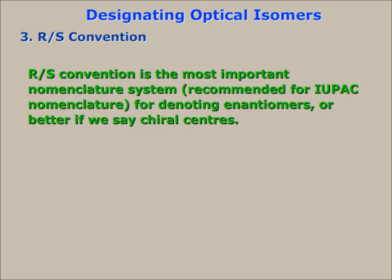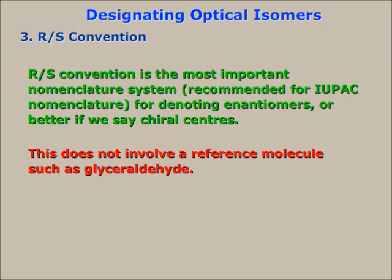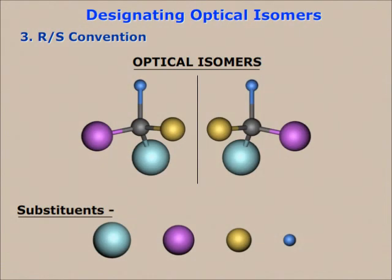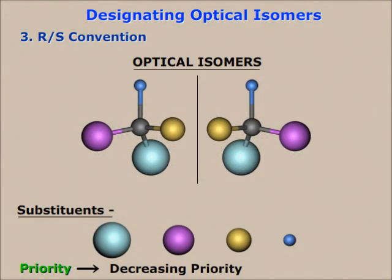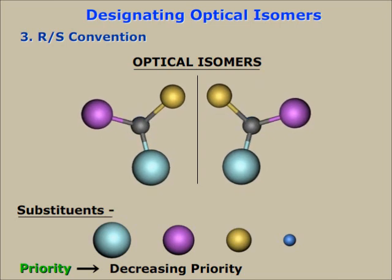Number three: the R/S convention. For chemists, the R/S convention is the most important nomenclature system recommended by IUPAC for denoting enantiomers, or better said, chiral centers. This does not involve a reference molecule such as glyceraldehyde. It labels each chiral center R or S according to a system by which its substituents are assigned a priority according to the CIP priority rules based on atomic number. If this molecule is oriented so that the lowest priority group is pointed away from the viewer, the viewer will then see two possibilities. If the priority of the remaining three substituents decreases in a clockwise direction, it is labeled R; if it decreases in a counter-clockwise direction, it is S.